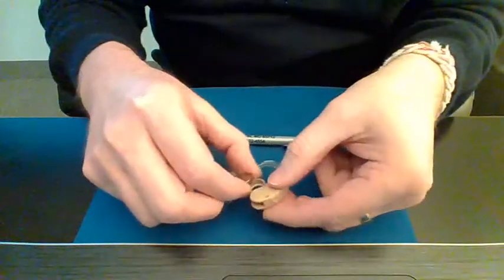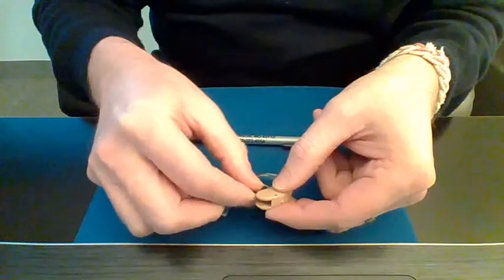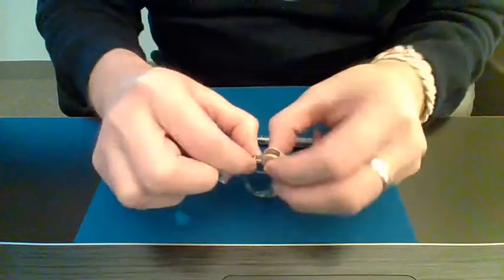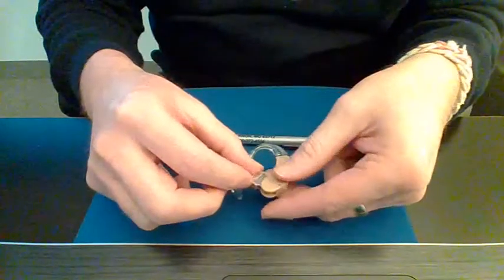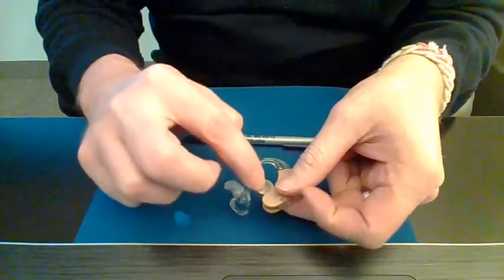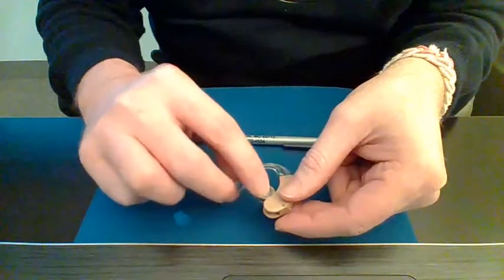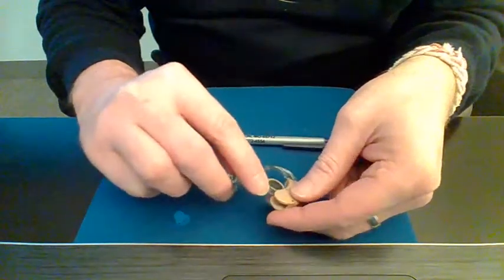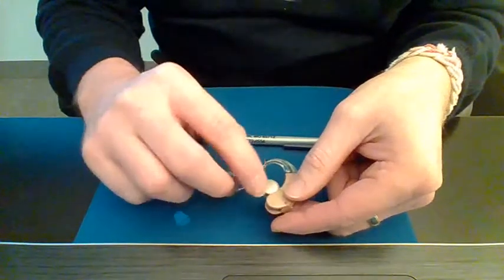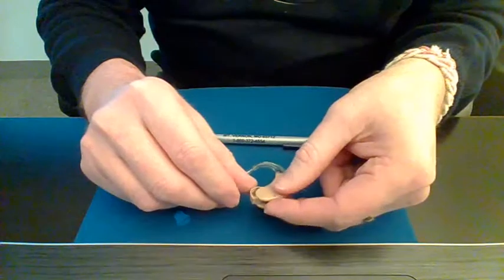And you just take that, you want that plus sign to face out, the beveled side to go down. That just fits in that little door nice and flush. You want to make sure that anytime you put a battery in, whatever style hearing instrument, that it sits flush. You don't want it to be too shallow or too far down or stick up too far, because you don't want to break the case on the hearing instrument when you try to shut the door.